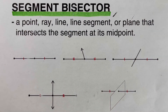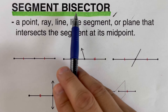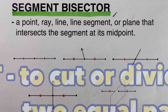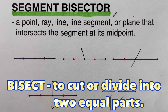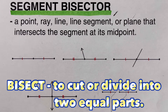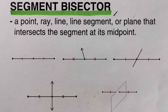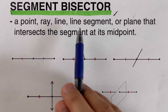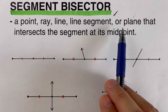Hello everyone, this video will focus on segment bisectors. The word bisector comes from the root word bisect, which means to cut or divide into two equal parts. So if we say segment bisector, the segment was cut or divided into two equal pieces. Some segment bisectors include a point, a ray, a line, a line segment, or a plane.